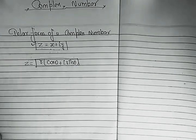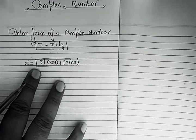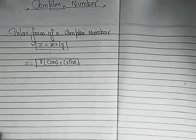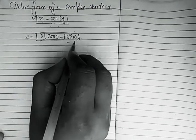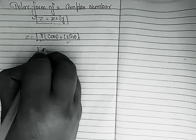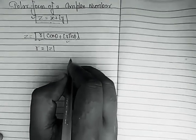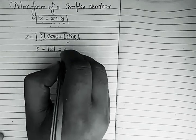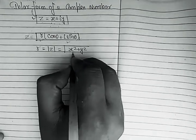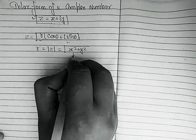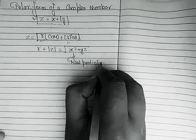What does r mean? r and θ are the two components of a complex number in polar form. r is mod z — the modulus of the complex number. The modulus of a complex number is √(x² + y²), where x is the real part of the complex number.